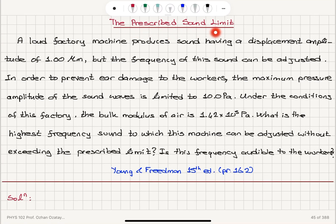The Prescribed Sound Limit. A loud factory machine produces sound having a displacement amplitude of 1 micrometer, but the frequency of this sound can be adjusted. In order to prevent ear damage to the workers,